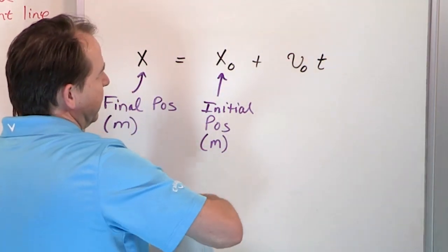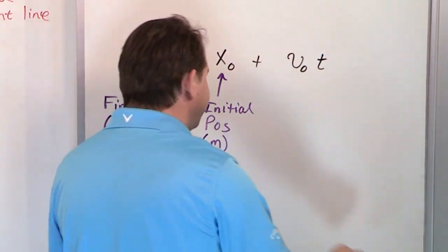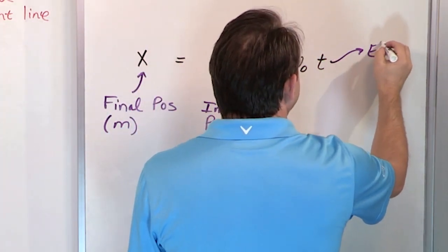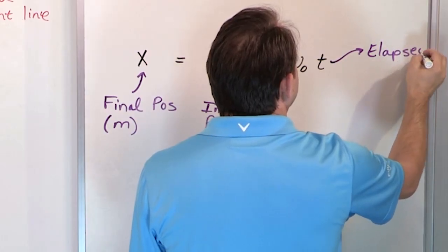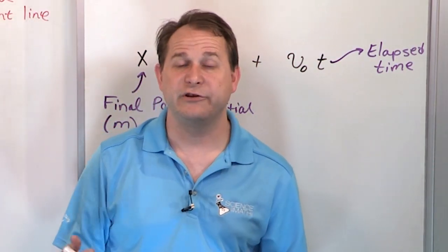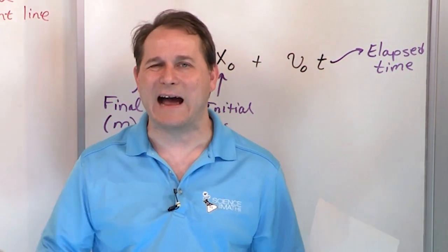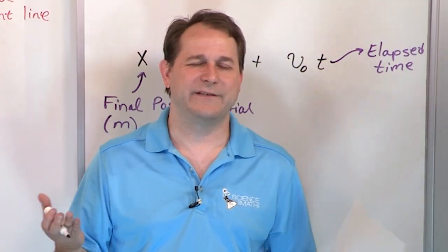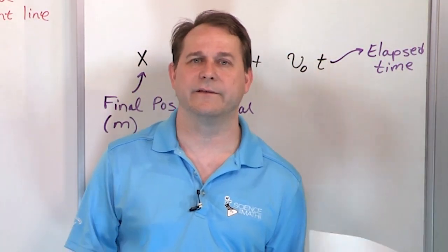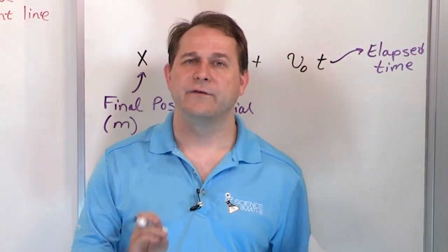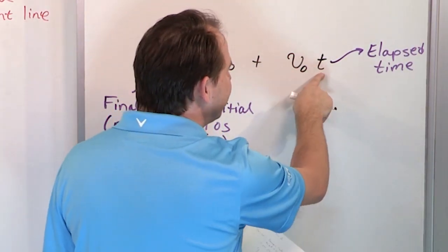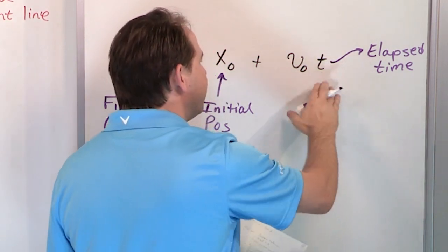What is t? That's going to be the elapsed time — how long my motion happens, in seconds. I want you to always work in seconds. A lot of times problems will be given in miles per hour or meters per hour, but in physics you want to deal in seconds. And you want to deal in meters unless you just can't. So: elapsed time, always in seconds — maybe 1,024 seconds, a big number, whatever — it's going to be in seconds.